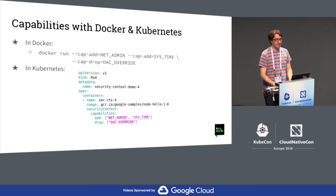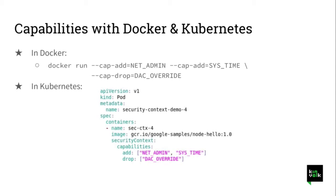On Docker and Kubernetes, we can define in the container which capabilities a container has access to. In Docker, we can use cap-add or cap-drop to add or remove from the default set of capabilities. And in Kubernetes, it's the same thing with those properties in the .yaml file — capabilities add and drop.